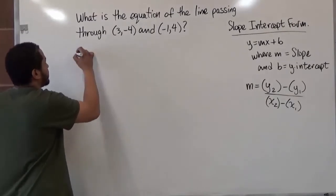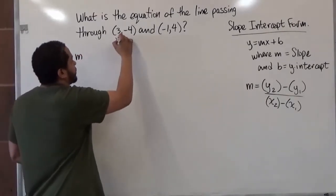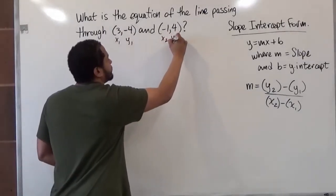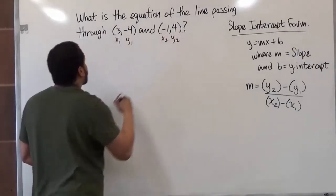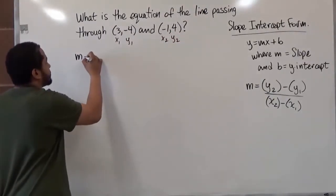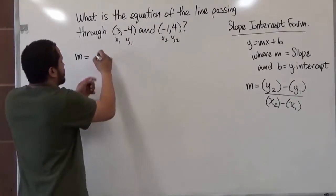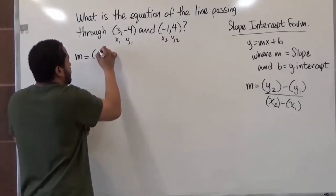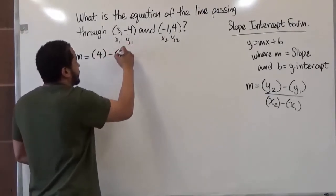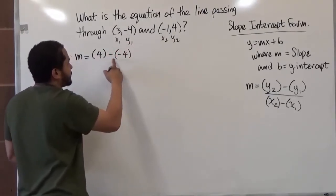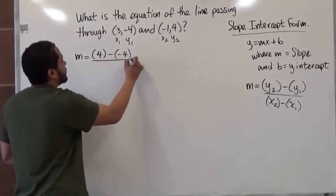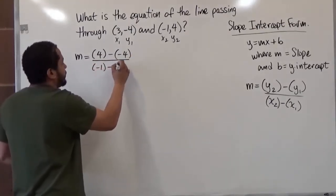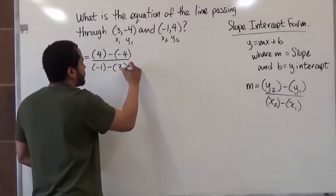So let's calculate our slope first. Let's designate our x1, y1, and our x2, y2. Now we're just going to substitute in our values. We have y2 is 4, and our y1 is negative 4 — and here's that particular change, the negative negative is going to be important. Our x2 is negative 1, and our x1 is positive 3.